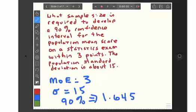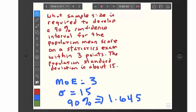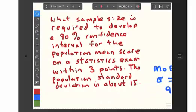So look here at an example. You can see it asks what sample size is required to develop a 95% confidence interval for the population mean on a statistics exam within three points. That's your margin of error. And the population standard deviation is about 15.